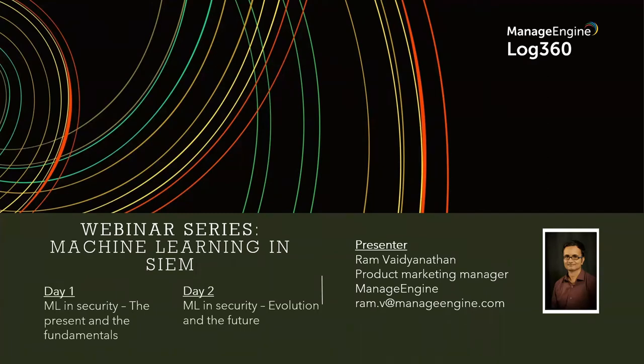I'm especially interested in how AI and ML can be used in cyber defense and how organizations can make better use of this technology in the days, months, and years to come. If you'd like to get in touch with me after this webinar, my email address is on your screen — it's ram.v@manageengine.com. Please send me an email and I'll get back to you. We'll be stepping into the agenda right now.